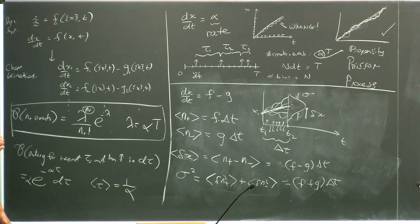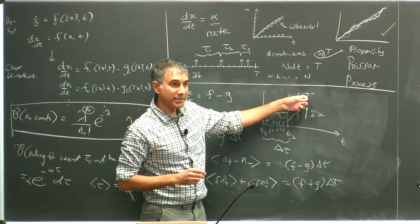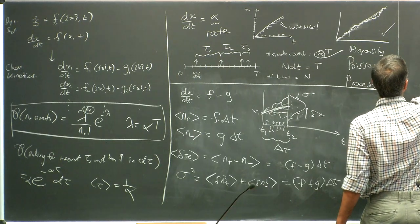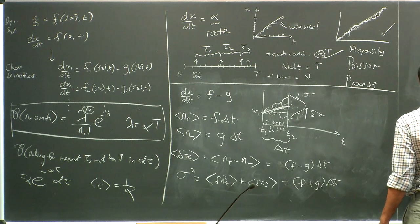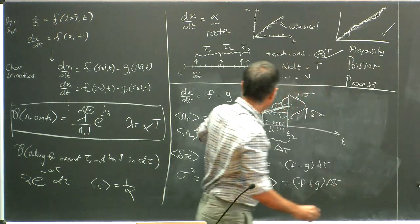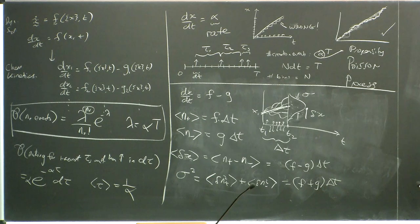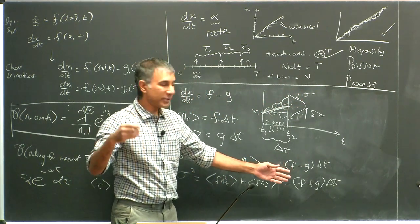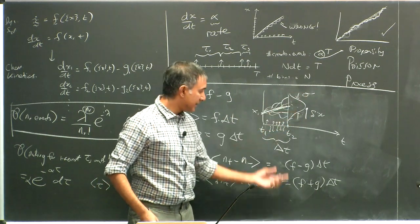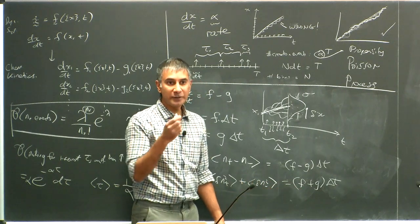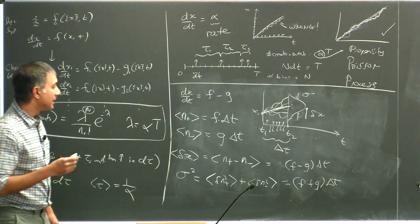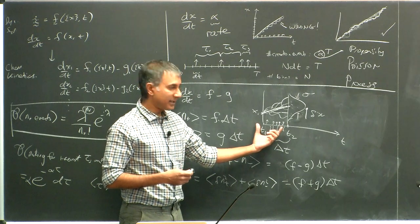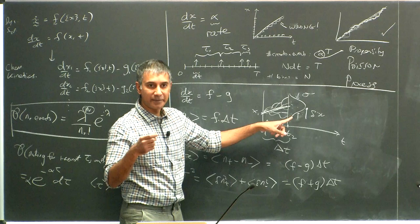So the variance — not the standard deviation but the square of the standard deviation — equals (f + g)×δt. Therefore x(t + δt) = x(t) + (f - g)×δt + some noise whose variance is given by (f + g)×δt. So far no approximations have been made — this is exact. Now we make an approximation: assuming there are enough events in this interval (10, 20, 100) that we can reasonably approximate this as a sum of many random variables, which gives a Gaussian distribution.